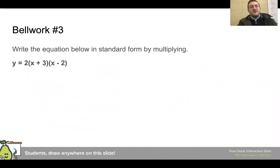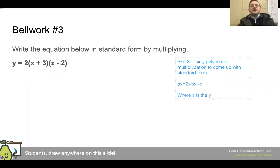Another thing that we can use, this is skill three. So skill three is using polynomial multiplication to come up with standard form. And standard form is sort of that ax squared plus bx plus c, where c is the y intercept. And on this one, we're just converting into standard form. So there's really two ways that you can do this. I think regardless, you do want to make sure that you are distributing. So I'm going to say that this is two x plus six and we have an x minus two as well.